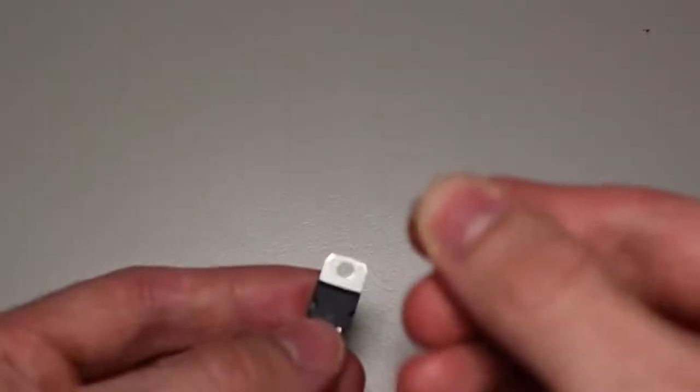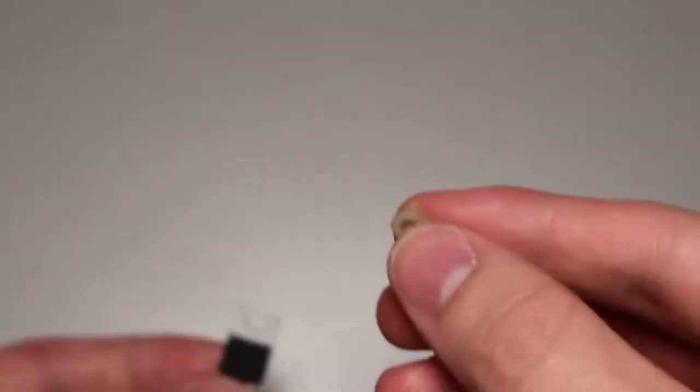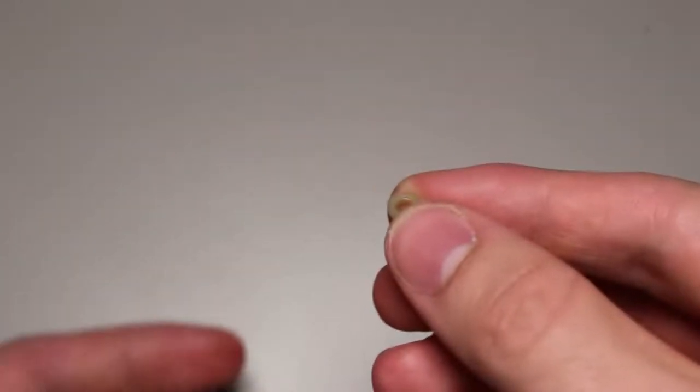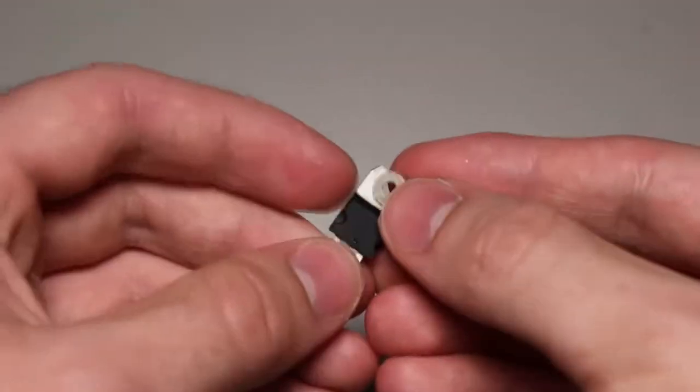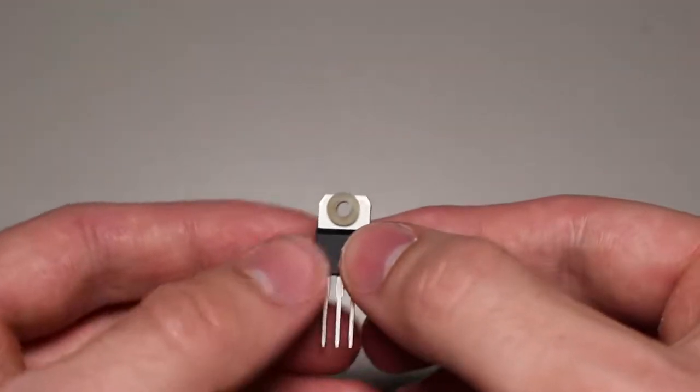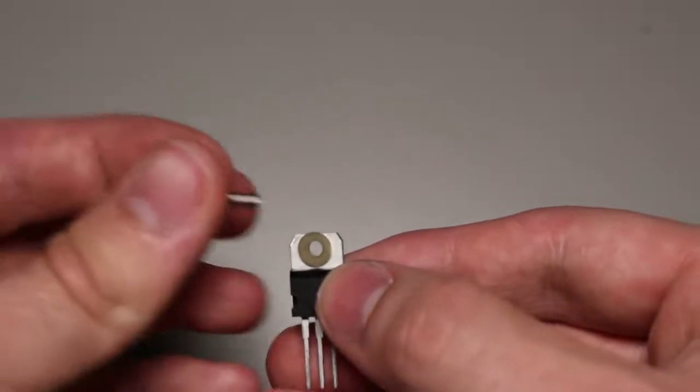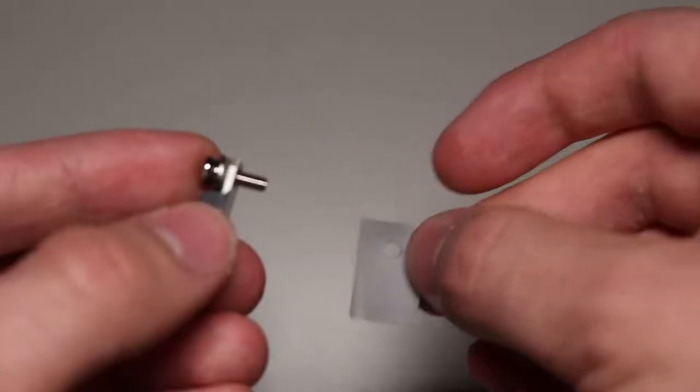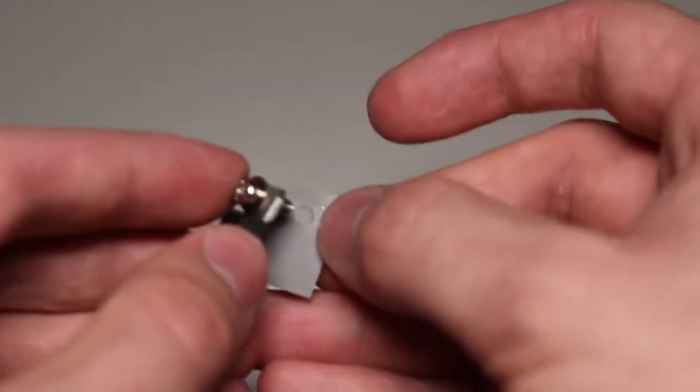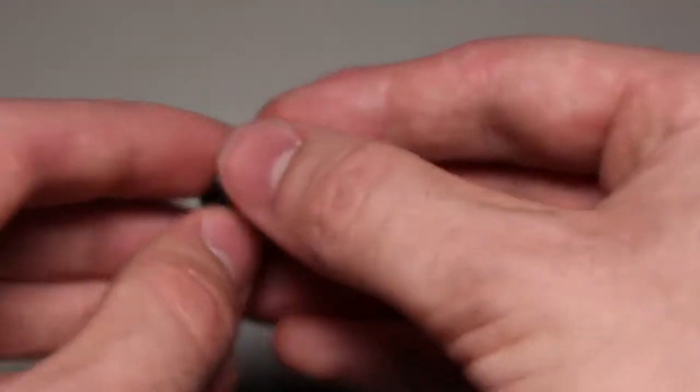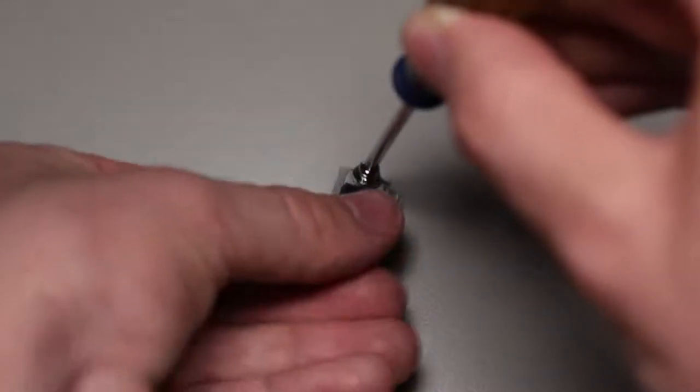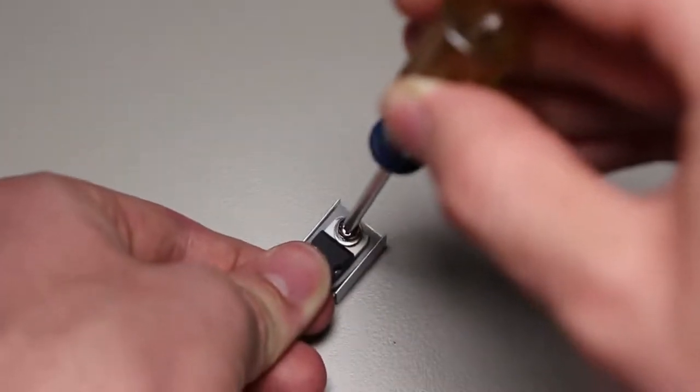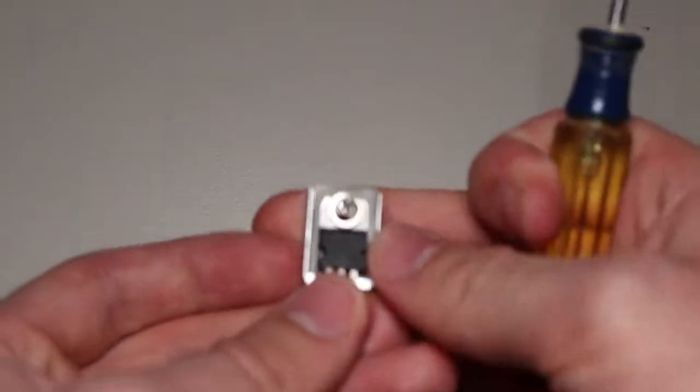First, we will put the washer onto the TO220's hole. Then we will fit the screw into that hole. The isolating pad will go through the other side of the screw. And finally, we can locate the hole in the heatsink and screw the whole assembly into place. Make sure that it is tightly fit. No matter the size of your heatsink, this method should work.